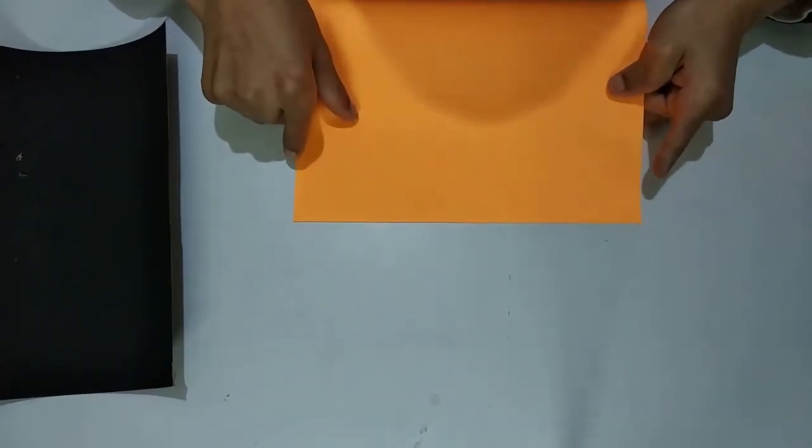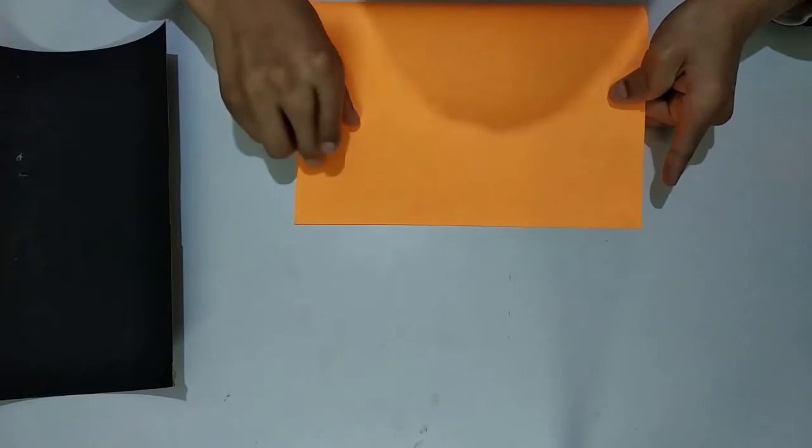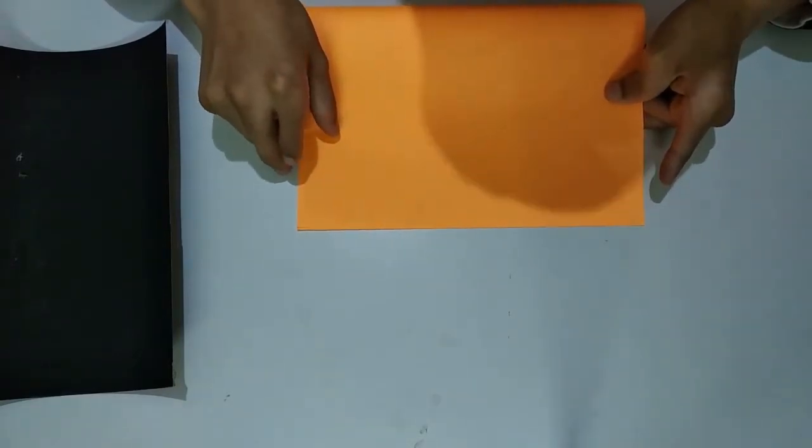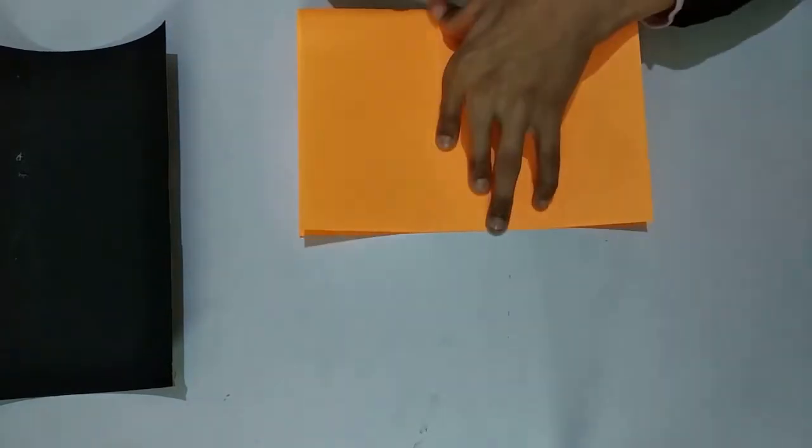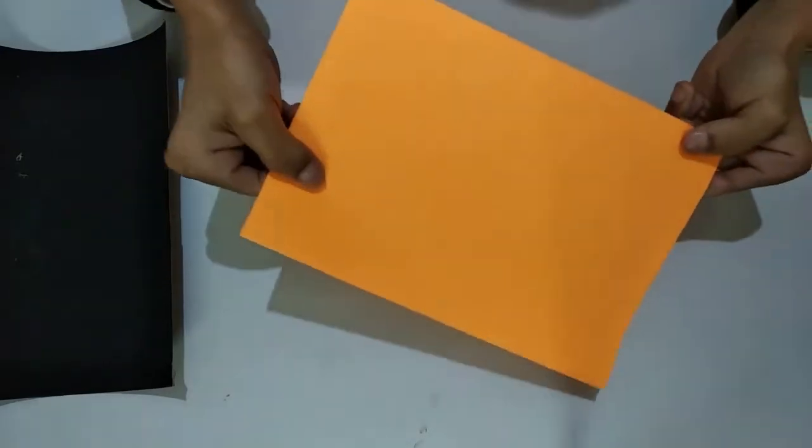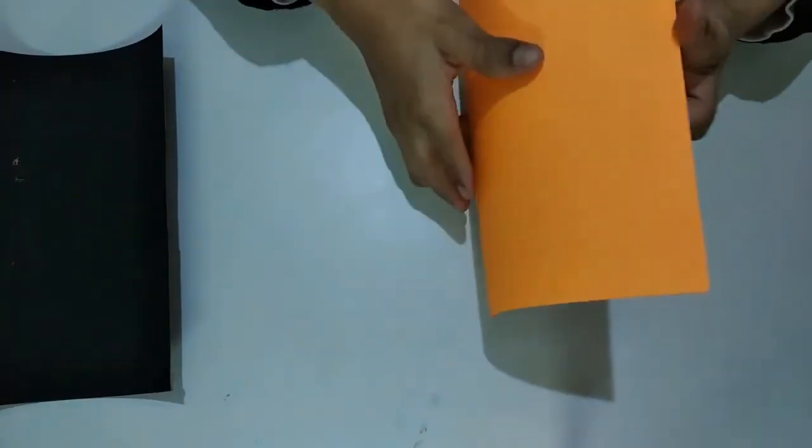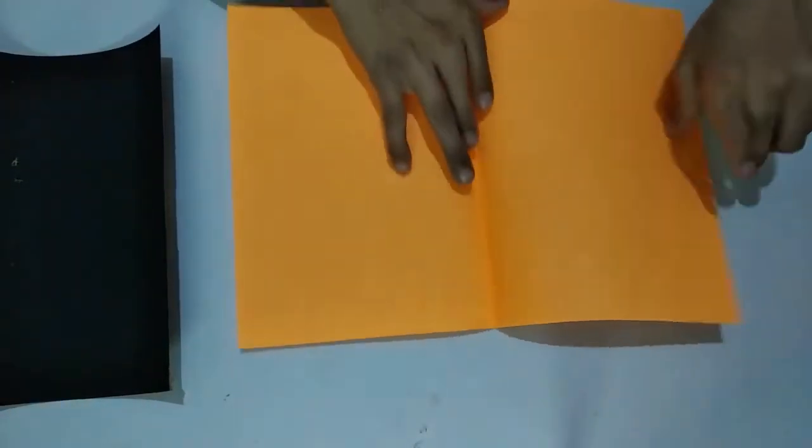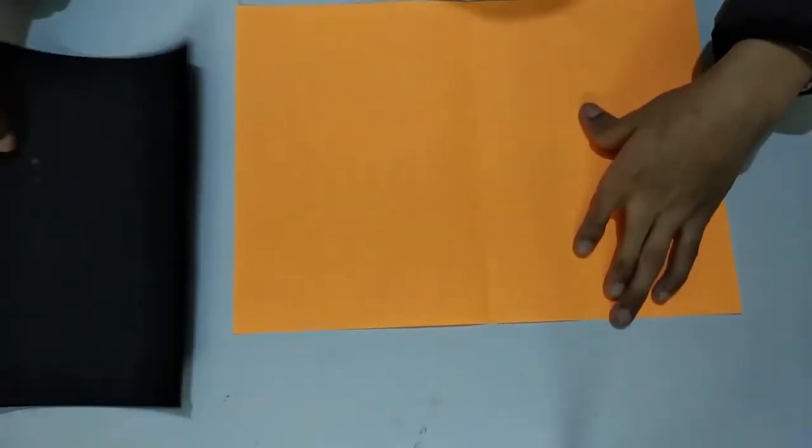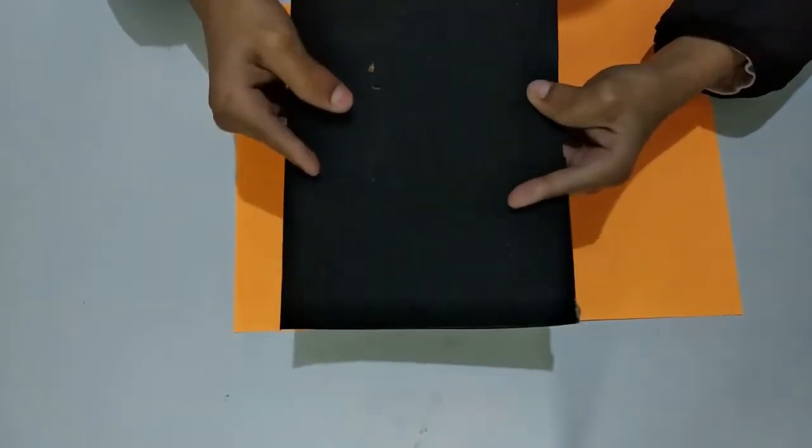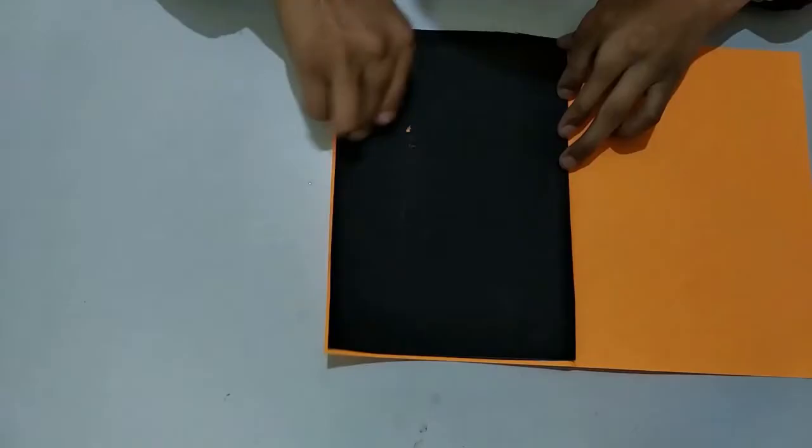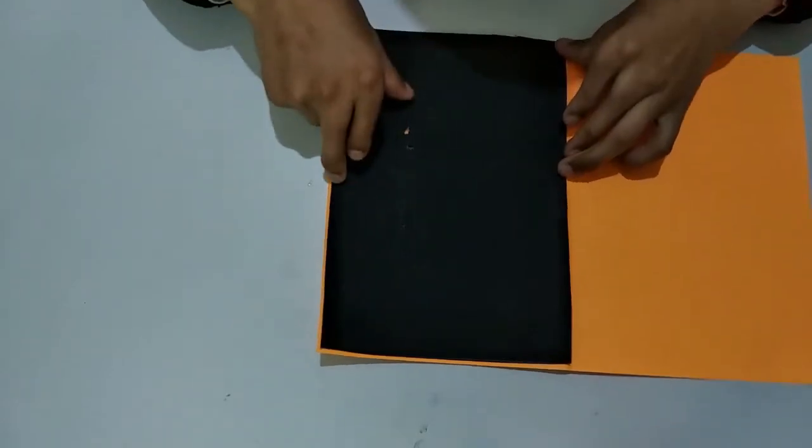First of all, we have to fold A4 side sheets into half. Now we have to paste this half A4 side sheet here. See, it looked like this.